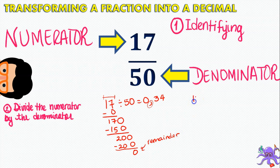So, 17 divided by 50 is going to be 0.34. So guys, that's very useful for your daily lives to identify the numerator, the denominator, and then change it into a decimal.